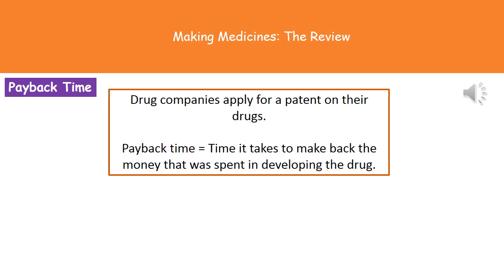We've heard the phrase 'payback time' from core science when looking at insulation in houses. In terms of medications, payback time is how long it takes a drug company to make back the money they spent developing the drug. They need to know whether the payback time will be shorter than the time they have on their patent. Any drug that's made is applied for a patent, meaning only the company that developed it can sell it for a certain number of years. If they're not going to make their money back within that time, it becomes a problem, because once the patent expires every other drug company can manufacture it and the price drops, eating into profits.